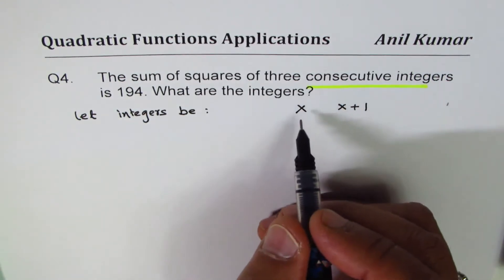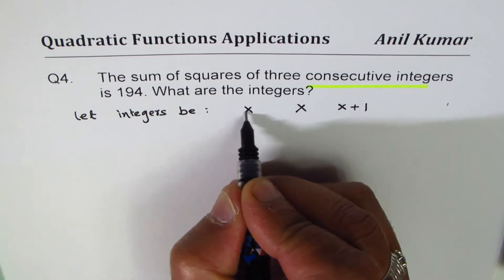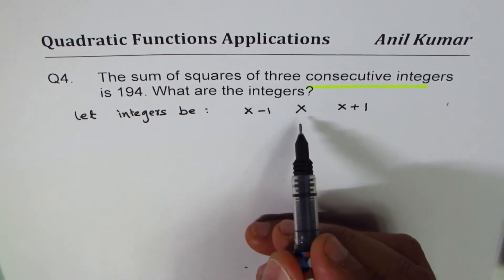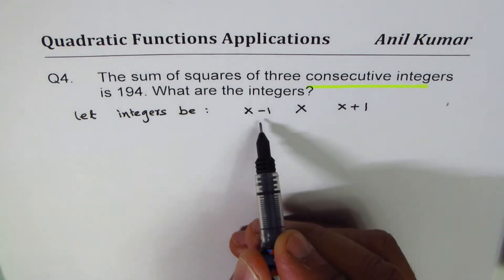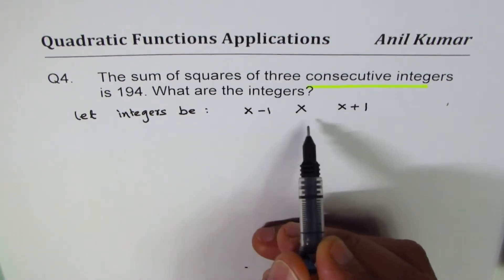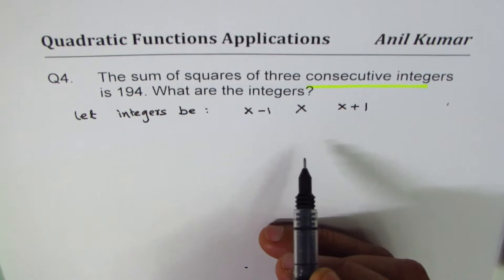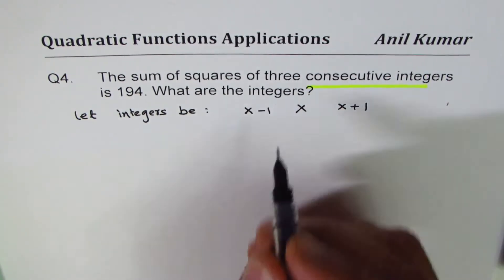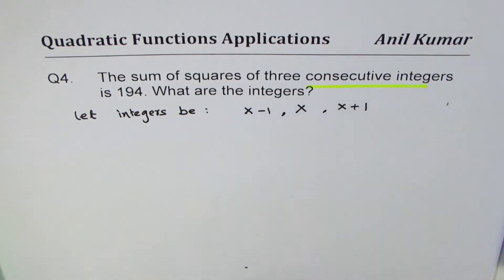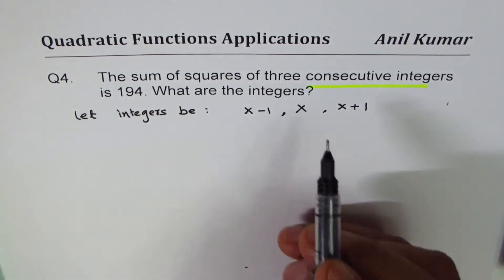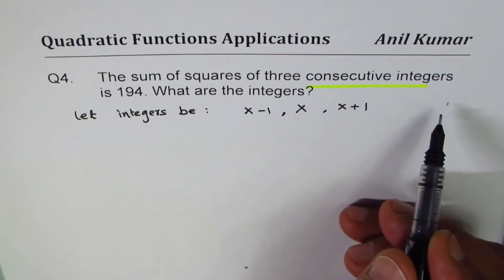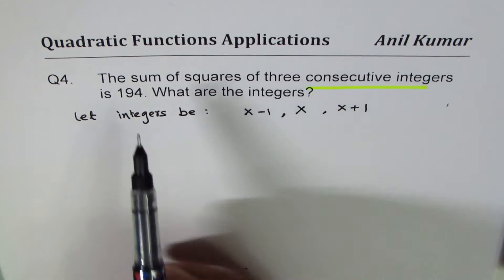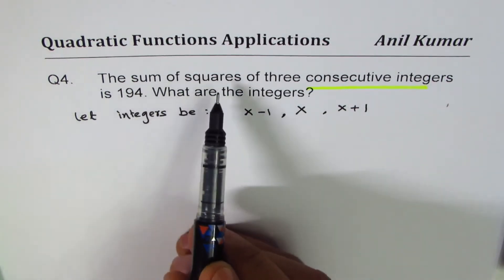I prefer to take an integer which is one less than x, so I'll take x minus one, x, and x plus one — these three are also consecutive. Think about 4, 5, 6 — they're consecutive. Taking x minus 1, x, and x plus 1 helps in calculations. You could also take x, x plus 1, and x plus 2, but these are my three consecutive integers.